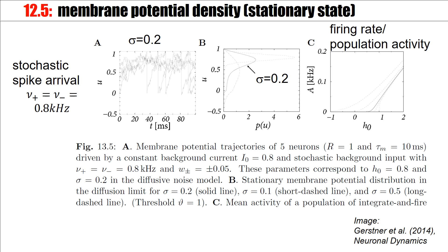We can also look at the distribution of membrane potentials, shown here in a simulation over 100 milliseconds. The condition is that excitatory and inhibitory spikes arrive with the same finite rate, so if you look closely you can still see the individual jumps. Averaging over a large population gives this distribution, which has the little kink described earlier. This is for sigma equal to 0.2, which corresponds to the simulation, and the correspondence is just perfect.